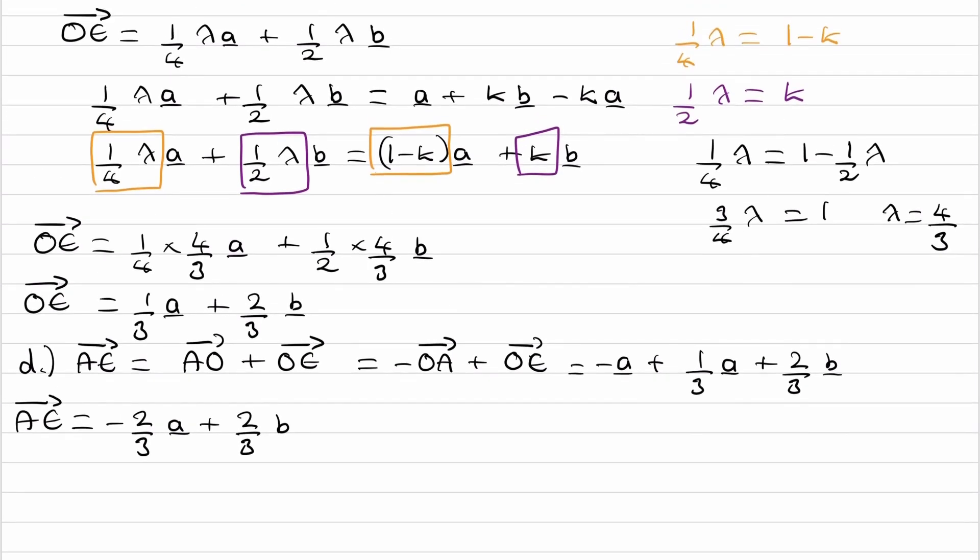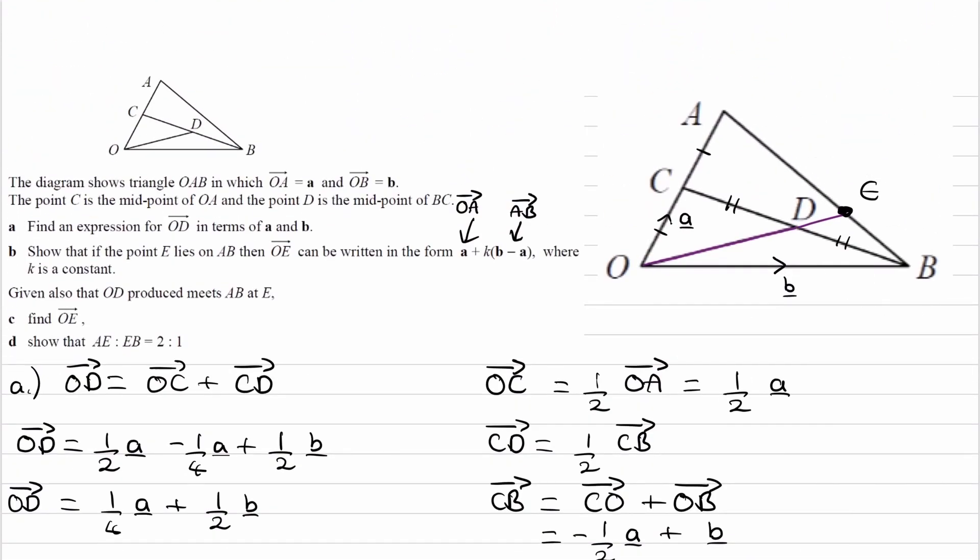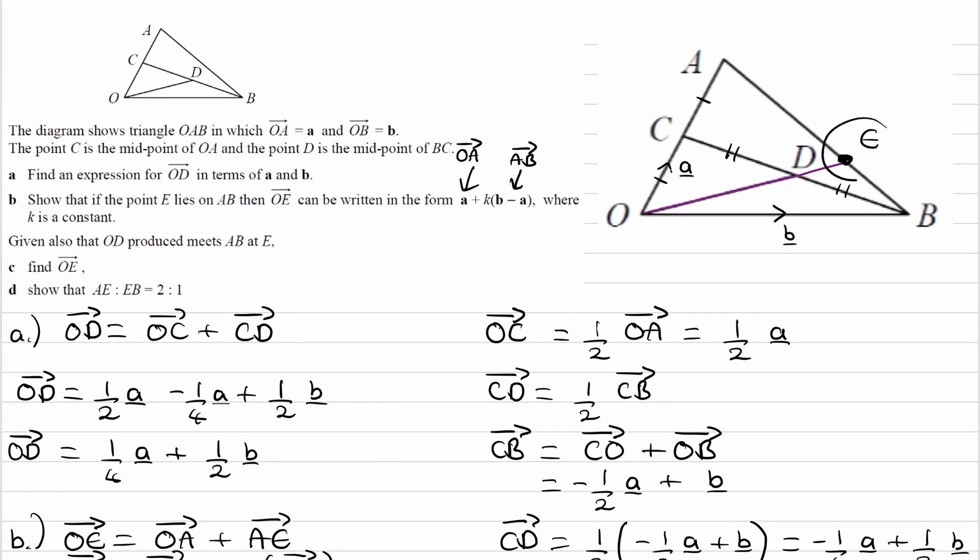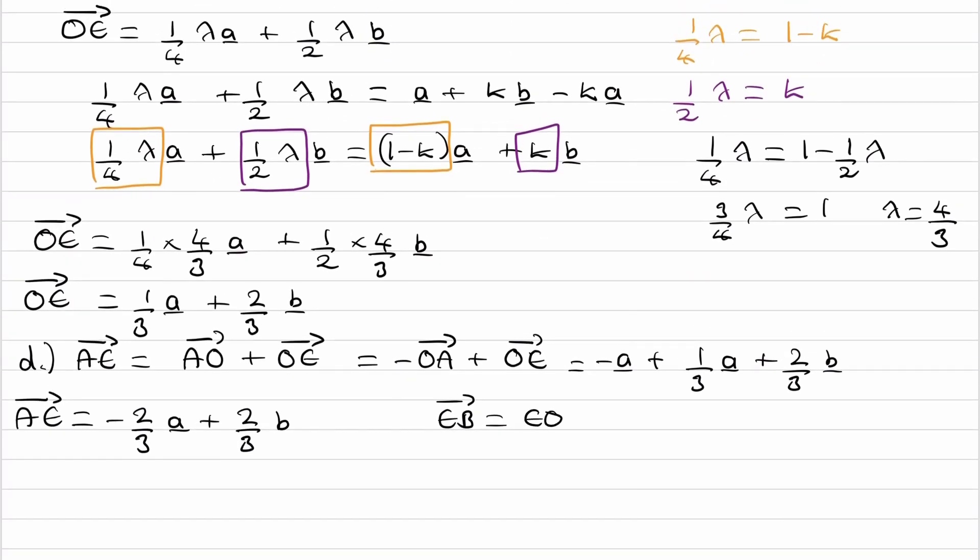Now let's work out what EB is. So EB is, so where is E? E is over here. So we want to work out EB. I can work out what EO is, and then go from O to B. So this is EO plus OB.